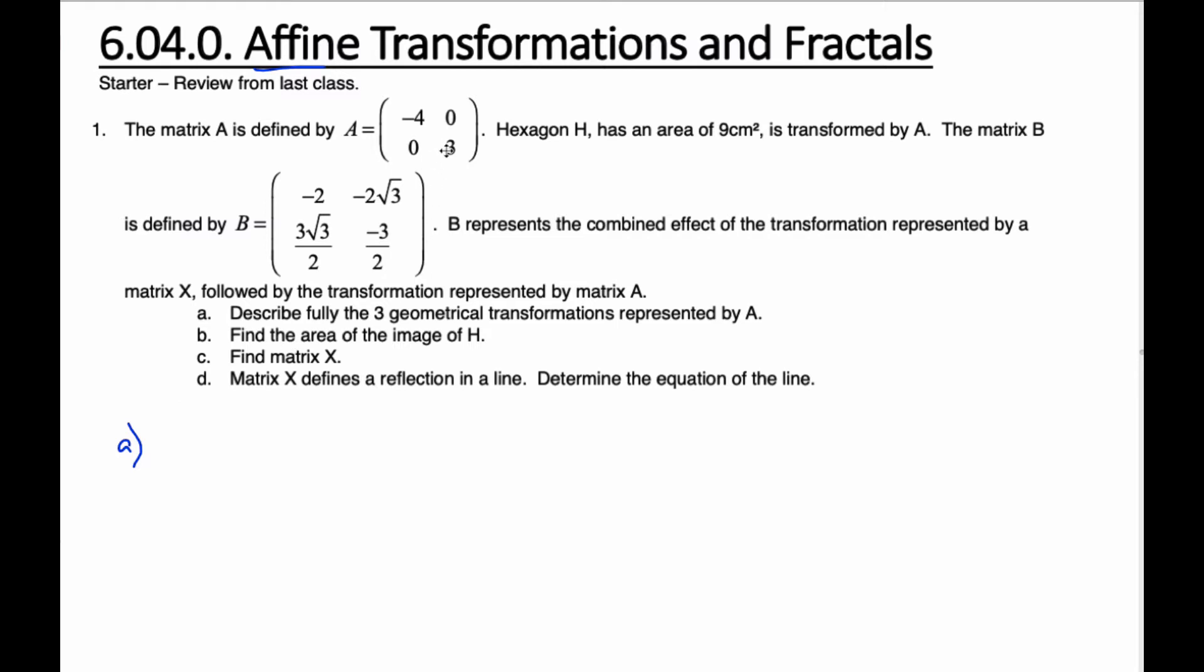Okay, so for A, there's a bunch of things going on here. The first thing is this negative 4 here. I know that it was at 1 times 0, 1, or (1, 0). And so that (1, 0) has gone over here to negative 4. So it's done two things.